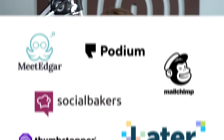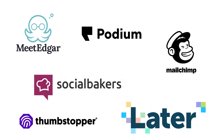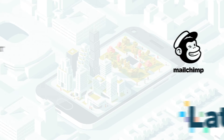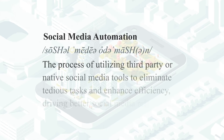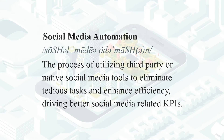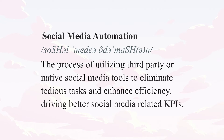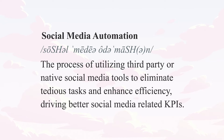Some are built for smaller independent social media pages, while others are crafted to help enterprises manage and syndicate mass amounts of social media content. Before we dive into those different types, let's give the term a generic definition. Social media automation is the process of utilizing third-party or native social media tools to eliminate tedious tasks and enhance efficiency, driving better social media related KPIs.